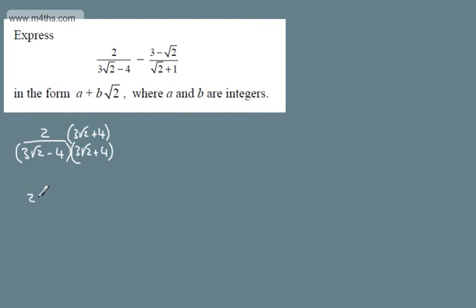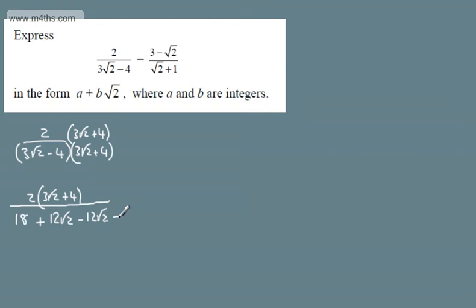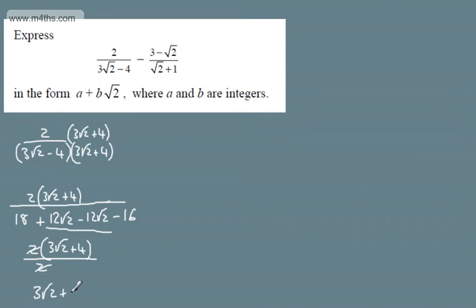I'm going to show full workings. In the numerator, I'm going to have 2 lots of 3 root 2 plus 4. I will expand the denominator. If I multiply 3 root 2 by 3 root 2, that's 9 times 2, which gives me 18. Then plus 12 root 2 minus 12 root 2, which cancels. And minus 4 multiplied by 4, which gives us minus 16. Tidying up: in the numerator we have 2 lots of 3 root 2 plus 4, and the denominator leaves us 2. The 2s cancel, so we can write this as 3 root 2 plus 4.